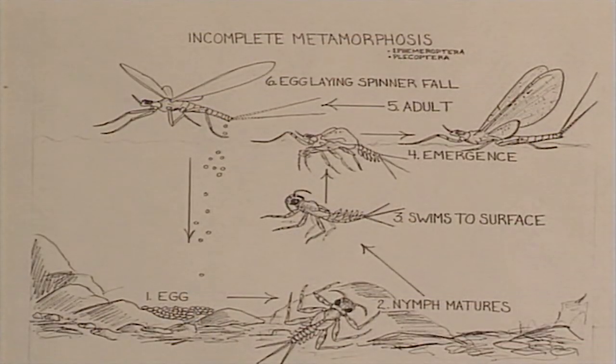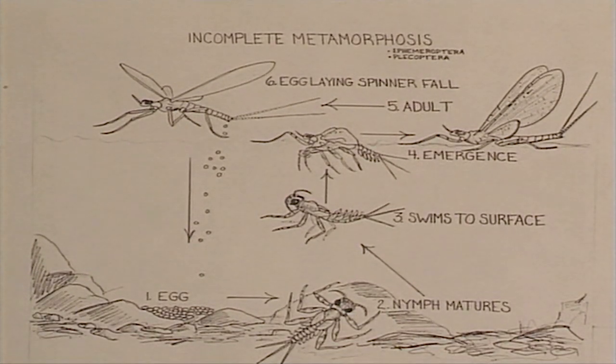The adult stage can also be important. After the nymph or larva hatches or emerges from its shuck, a lot of times they'll ride on the surface of the water, making themselves very available to the fish. Also, adults will come back to the water to lay eggs, or in the case of mayflies, they have a separate stage called the spinner stage.